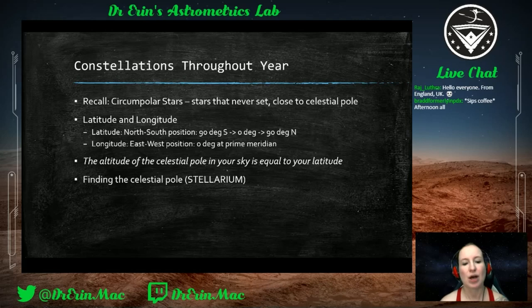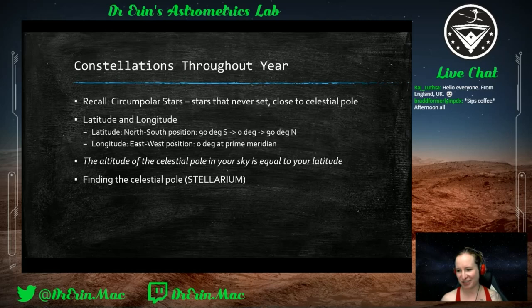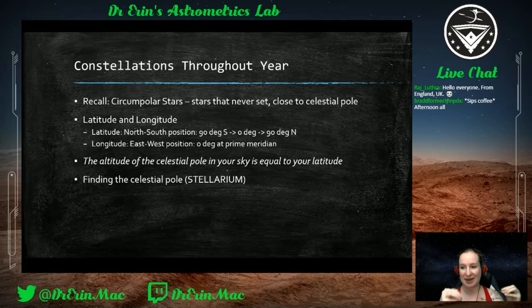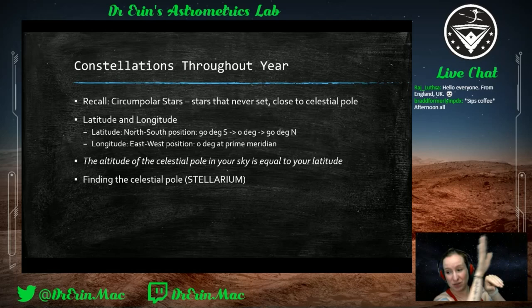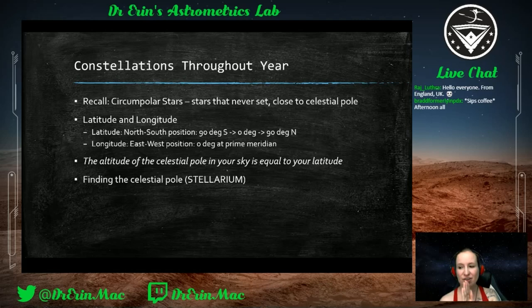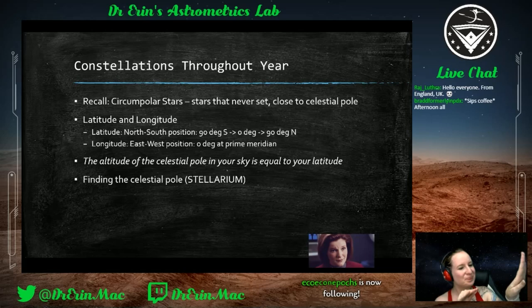I tried to explain this last week and it got a little chaotic, but the key is: the altitude of the celestial pole in your sky is equal to your latitude. If you're on the equator looking north, the celestial pole is basically flat on your horizon — because if you're on the equator, the pole is all the way down at the horizon and you're not going to see it.